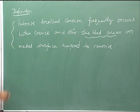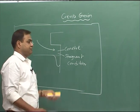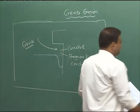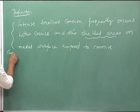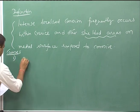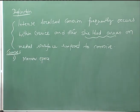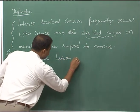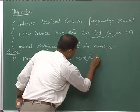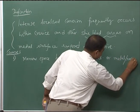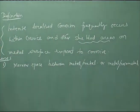This type of corrosion is associated with the stagnant condition of the solution existing in the crevice. Now, what could cause crevice corrosion? One cause is a narrow space between metal-to-metal or metal-to-non-metal contact areas.